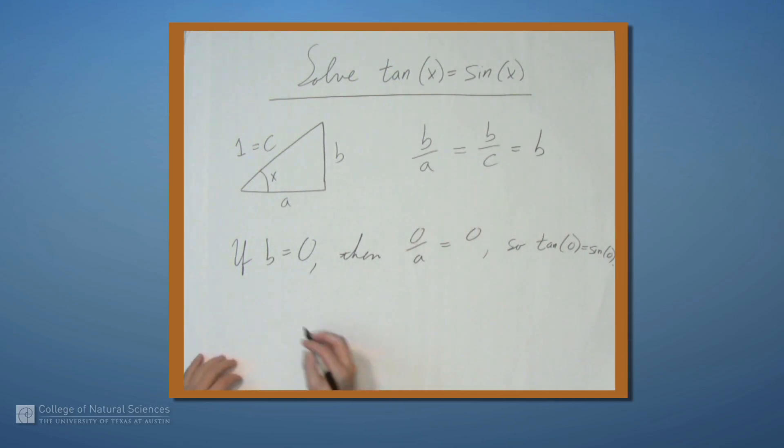What if b isn't equal to 0? So if b is not equal to 0, then we can divide both sides of this by b and we get 1 over a equals 1. Well 1 over a equals 1 if and only if a is 1.